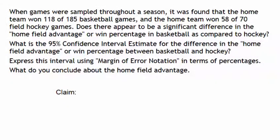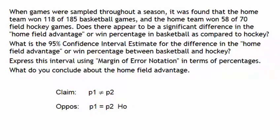Writing the claim, we will ask: is P1 not equal to P2? The opposite of the claim is P1 equal to P2. Step 3 is to identify the null hypothesis, which is the opposite of the claim because it contains the equal sign, which then means that the claim is the alternative hypothesis.